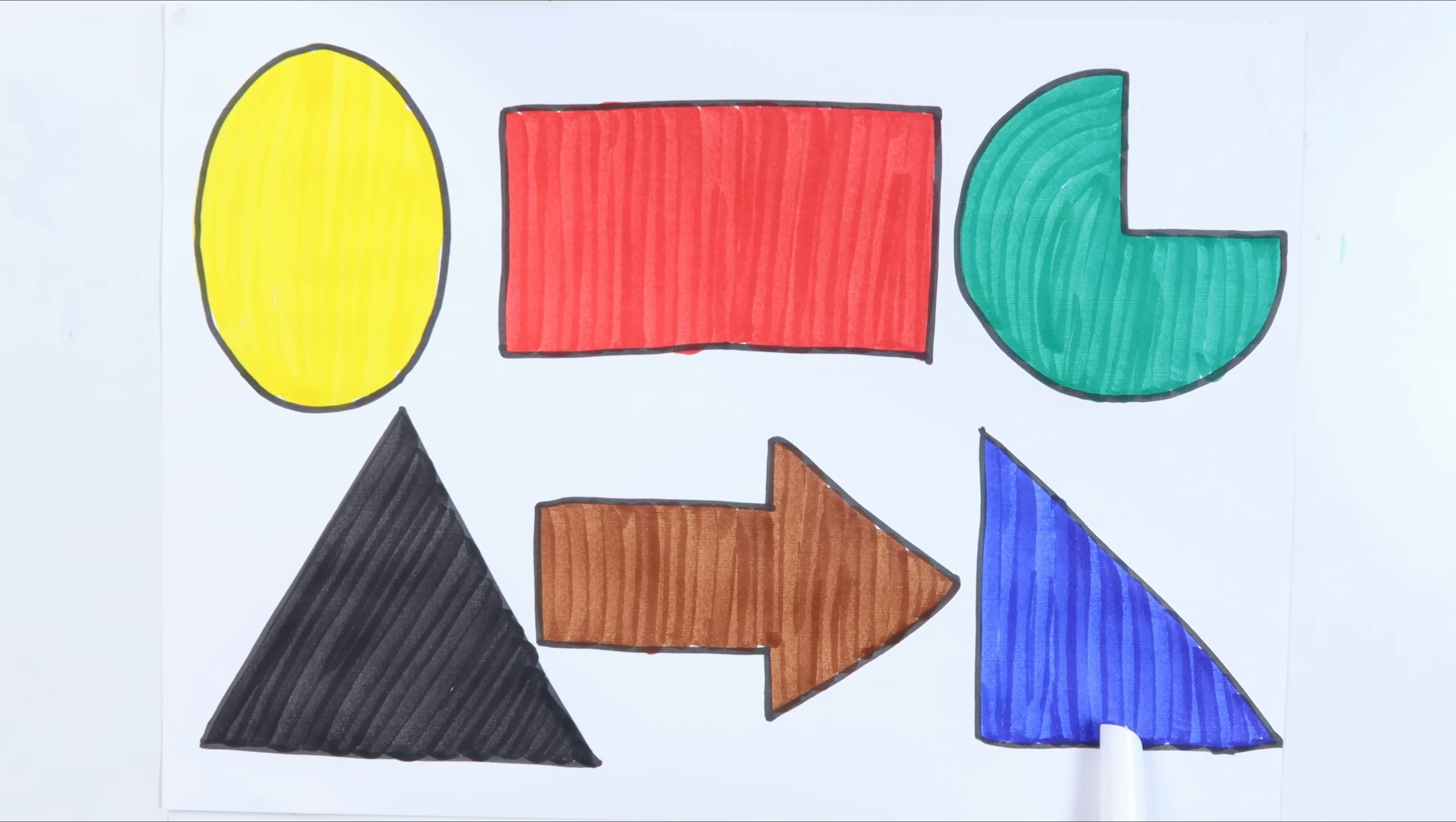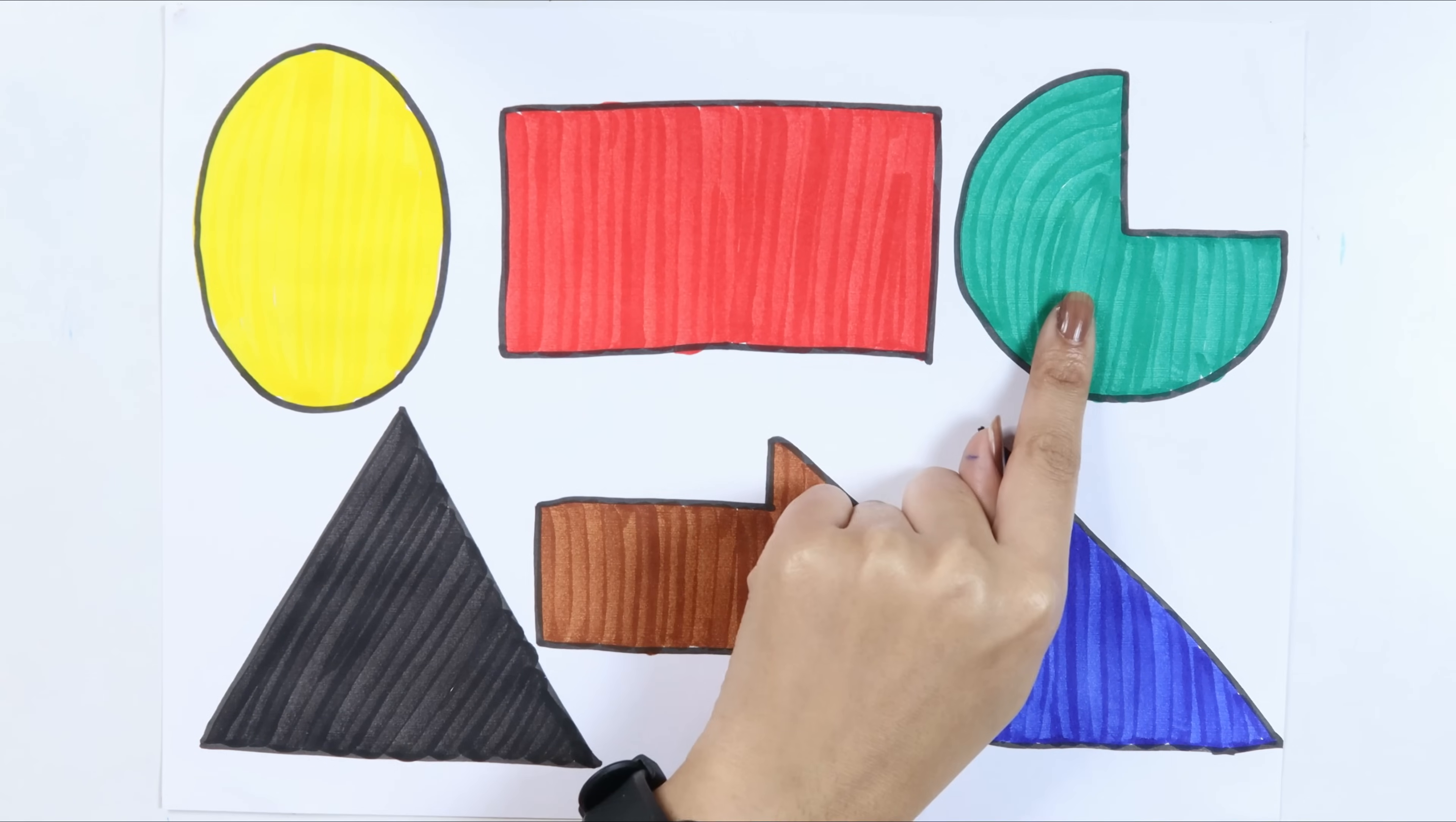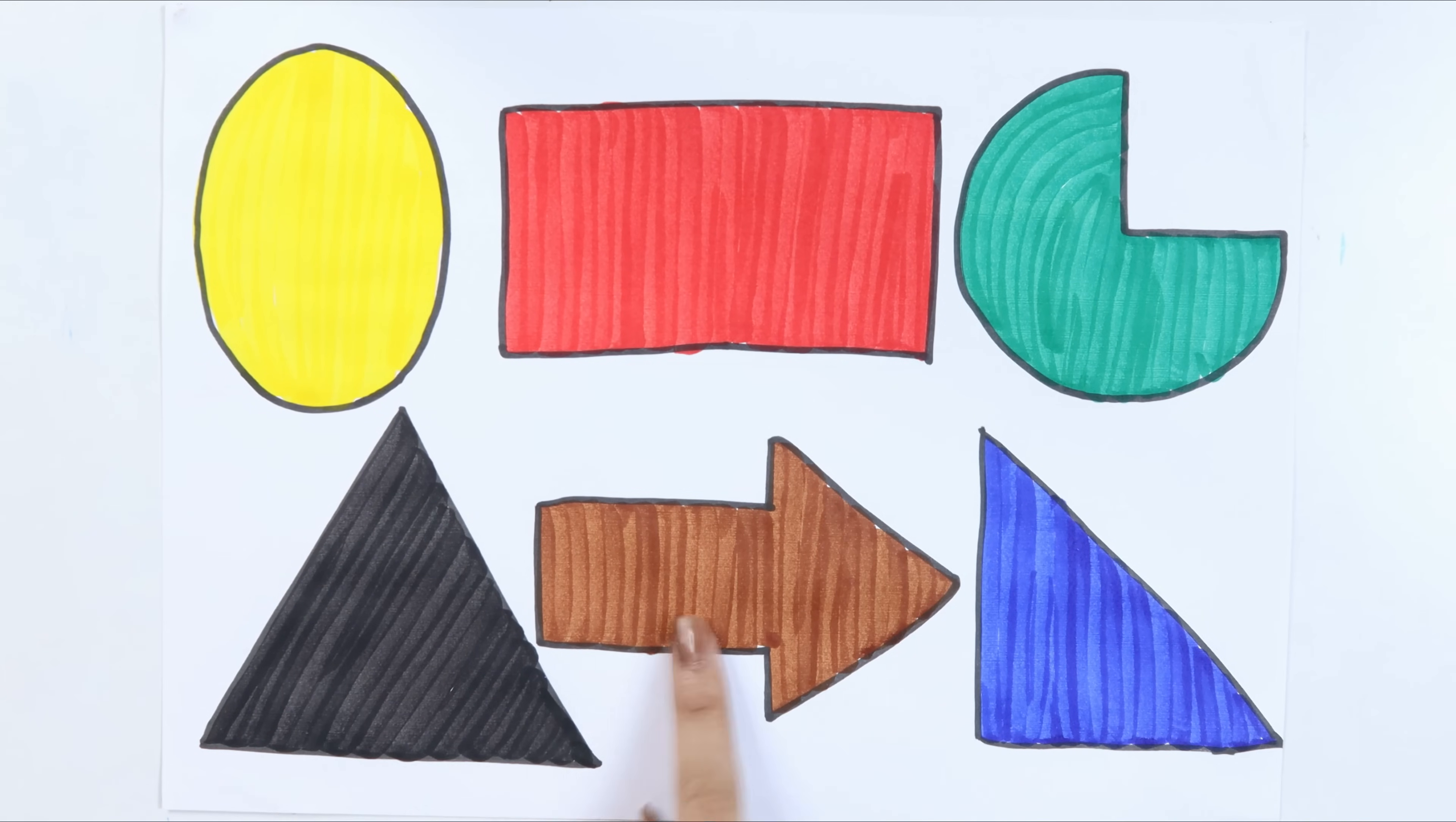Right triangle. Ellipse. Right triangle. Pie, triangle, arrow, right triangle. Bye.